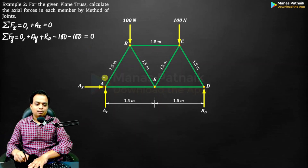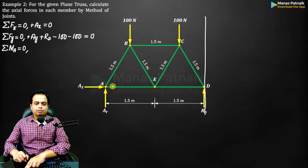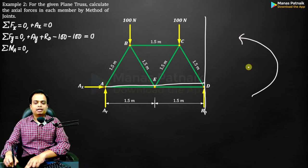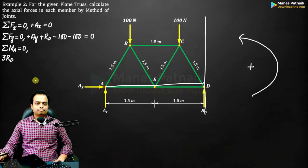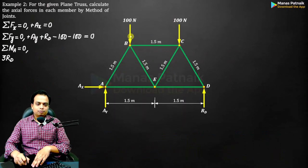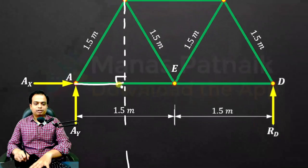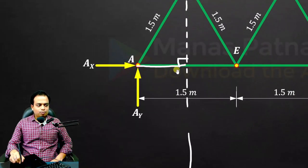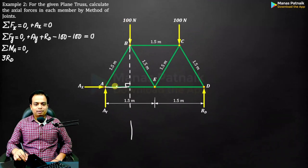Let's take the moment about A equal to 0. RD multiplied by its perpendicular distance creates an anti-clockwise moment, so it is positive: 3·RD. Secondly, the force of 100 N has a perpendicular distance which is half of 1.5, that is 0.75. So 100 multiplied by 0.75, clockwise — negative sign.